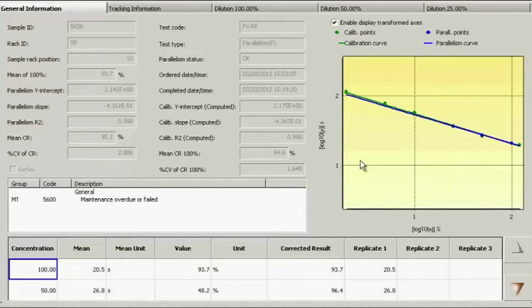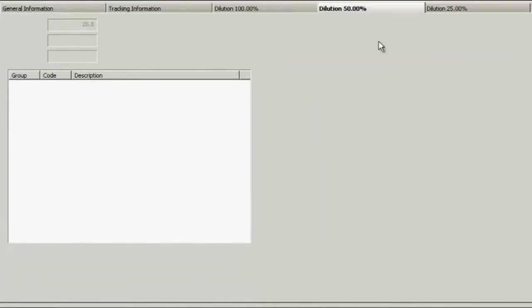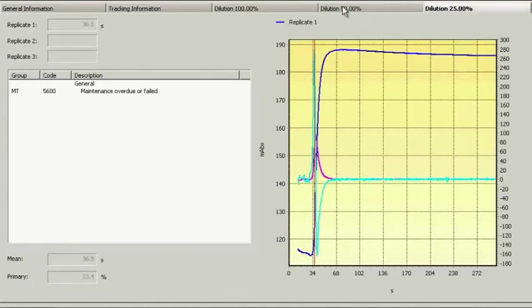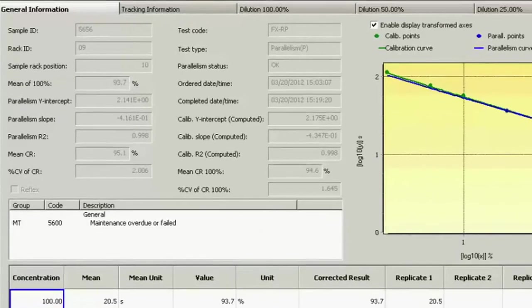Factor assays can be processed using multiple dilutions. These are automatically prepared by the system, results are checked for integrity and plotted against the calibration curve. In addition to the visual representation, the system uses mathematical algorithms to flag samples with potential inhibitors.